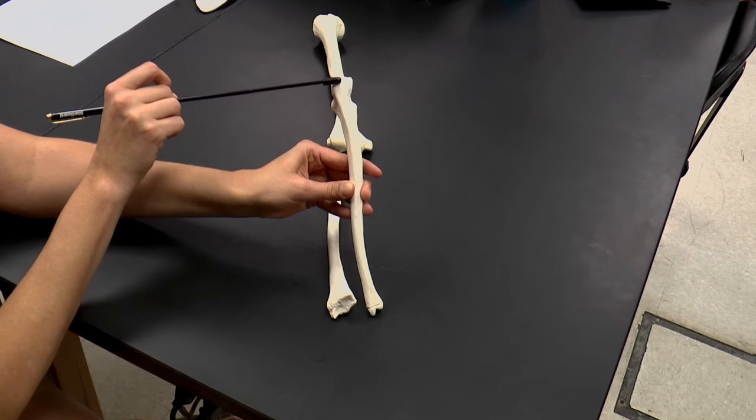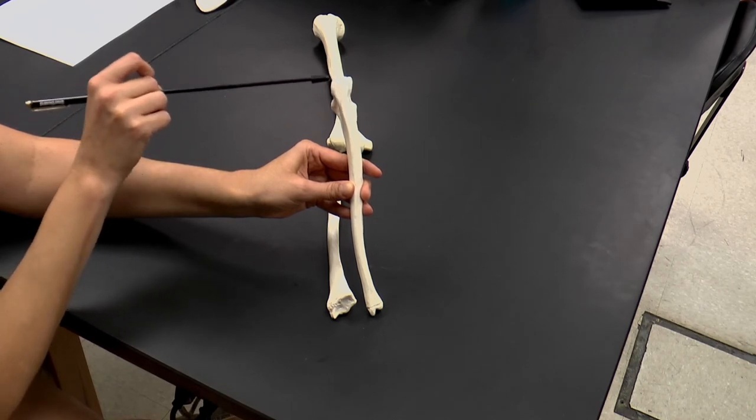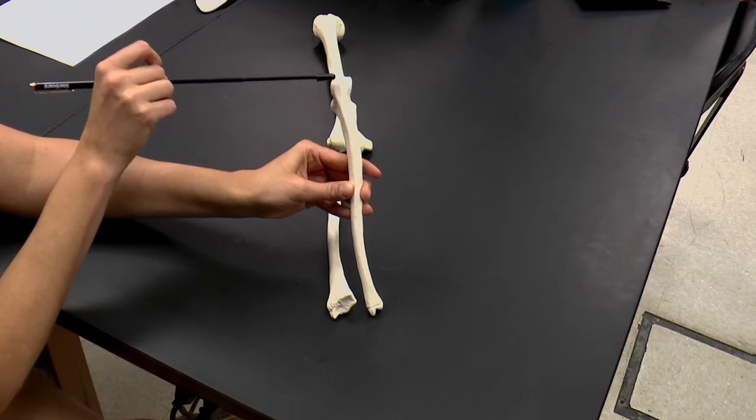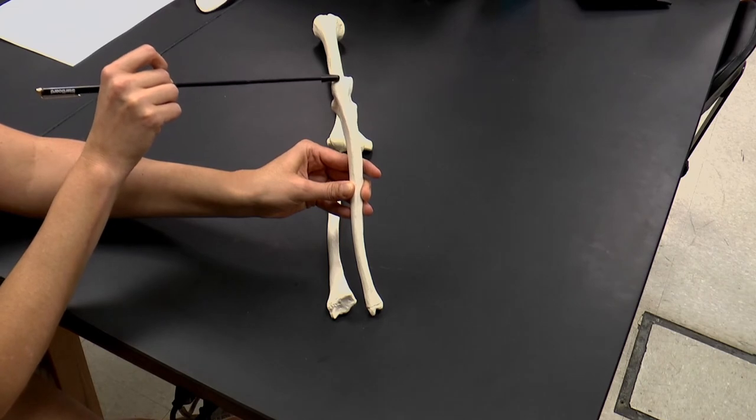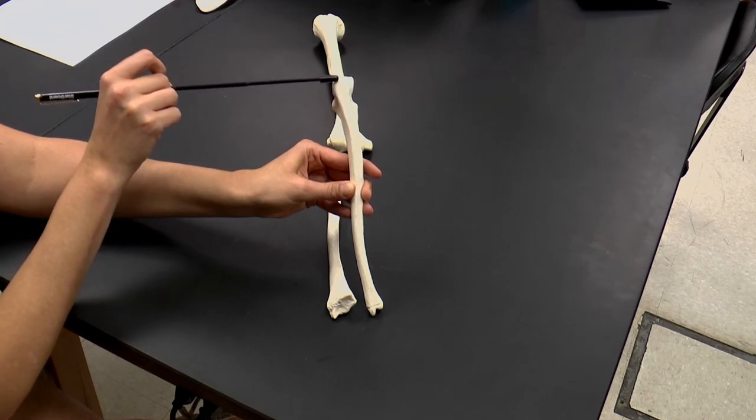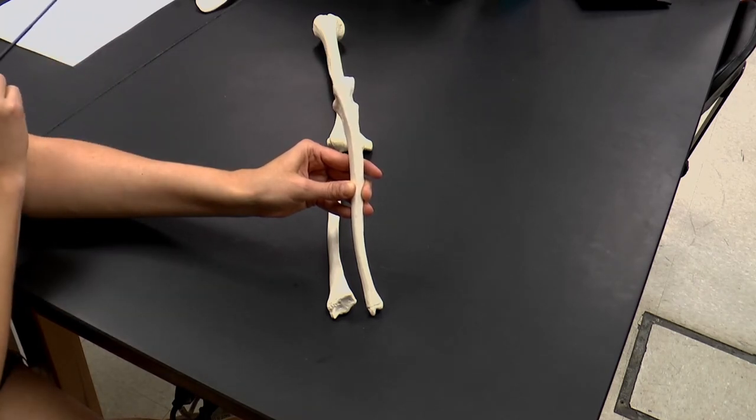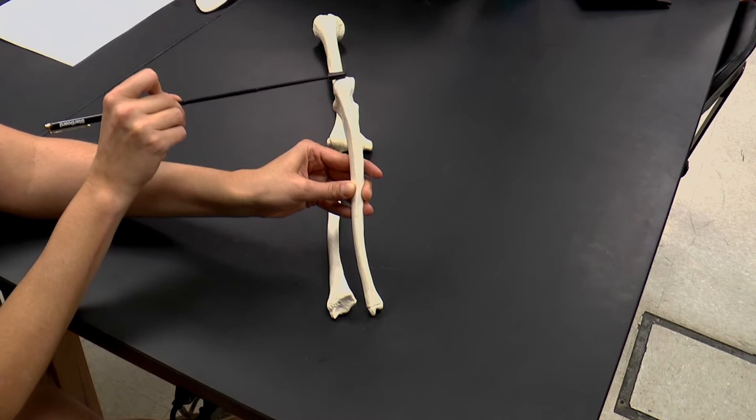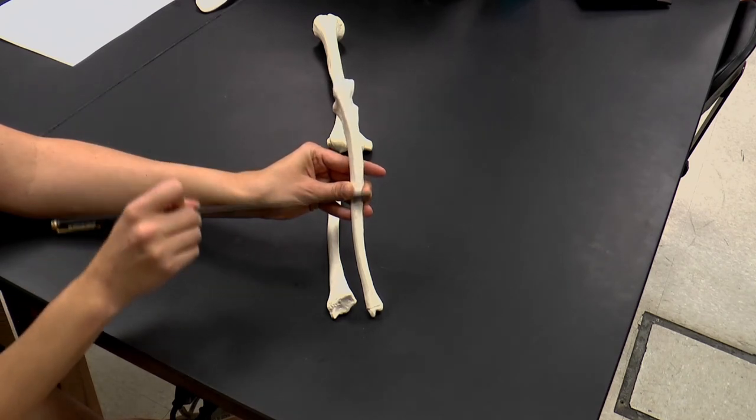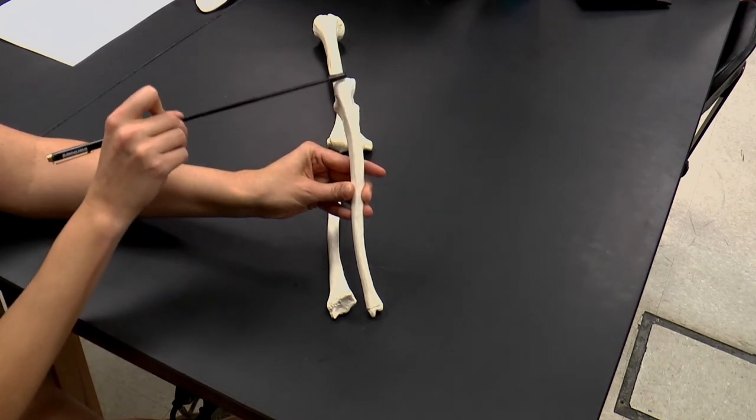The olecranon process. And it actually is when you think about putting your elbows on the table, this is usually what bony part you're actually putting on the table. If we were to ask you to point to your elbow, this is probably the part you're actually pointing to. The olecranon process. And you can see it's the back part, the posterior part of the ulna.